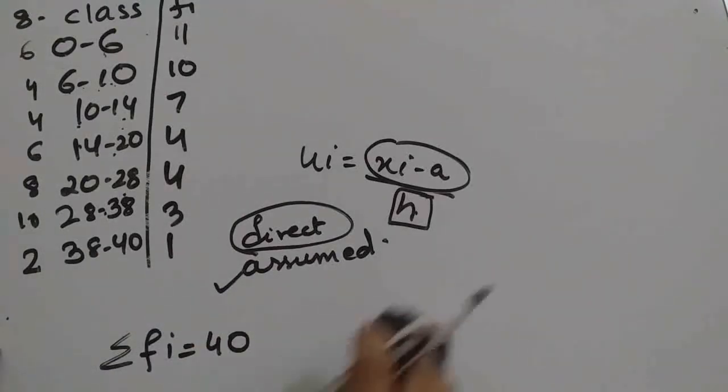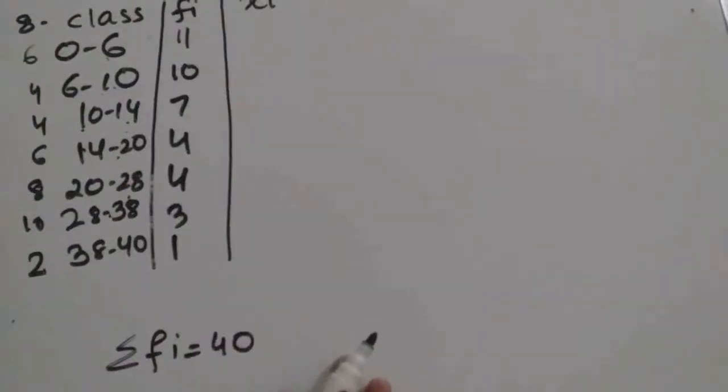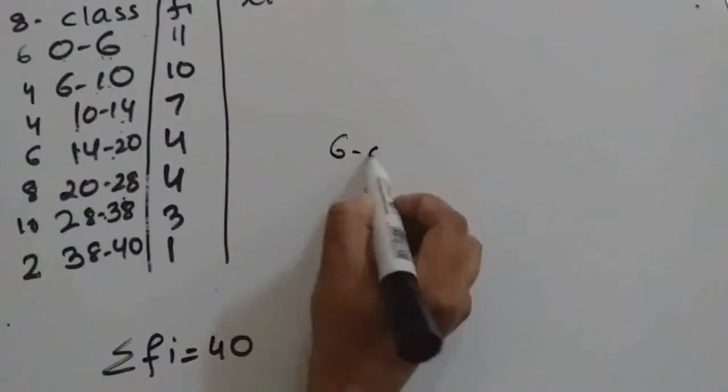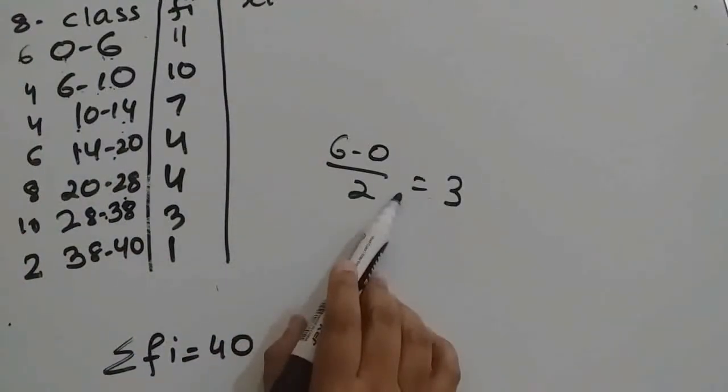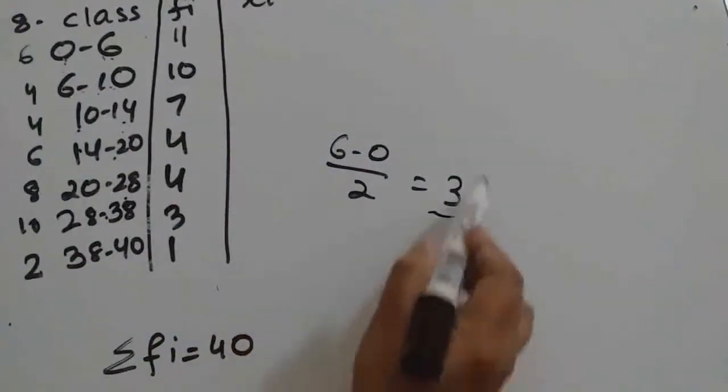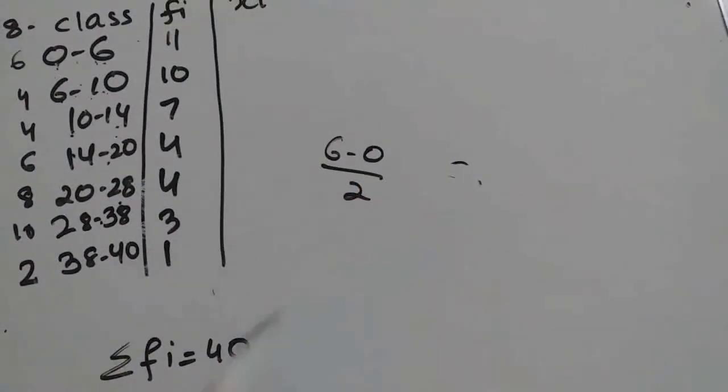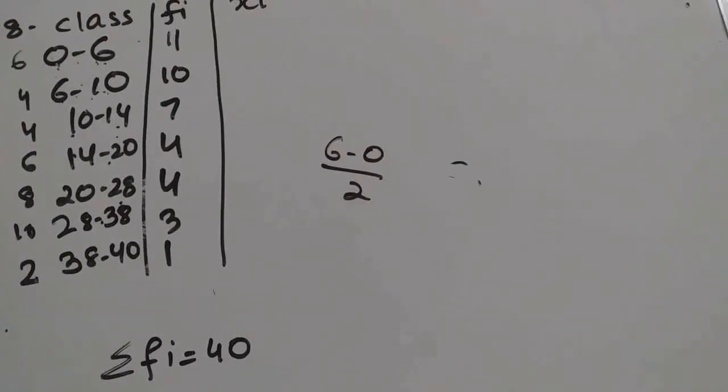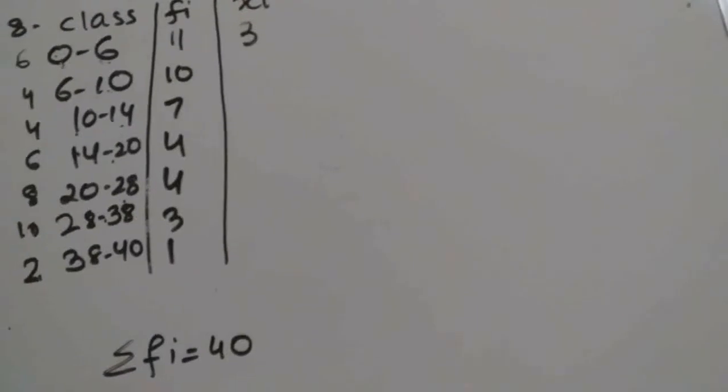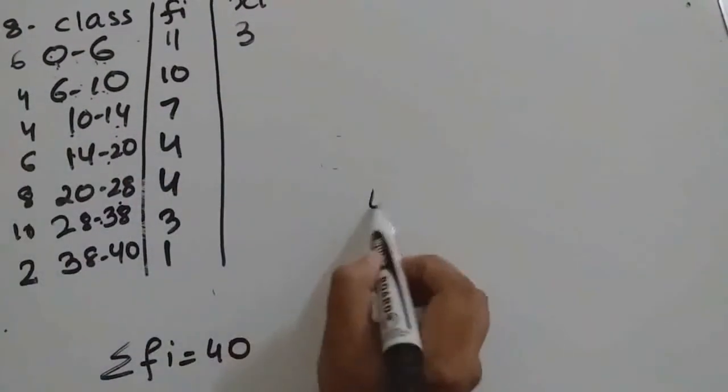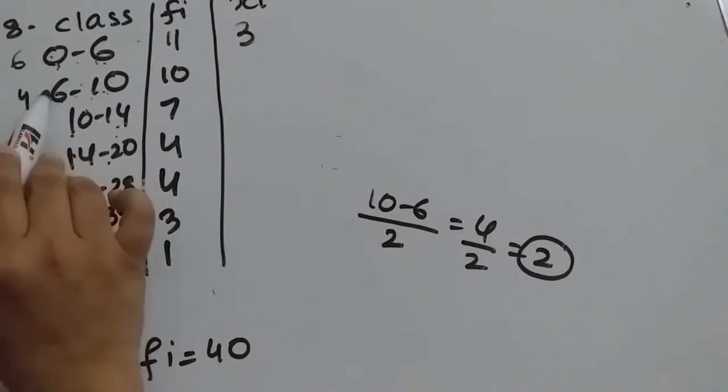For this particular example, first we will find xi, that is class mark. Here's the trick I gave: 6 minus 0 divided by 2 equals 3, and 3 we should add to the lower class. In the previous example we found it for one class and added it to each lower limit, but here you have to find separately for each class since class size is different. So 0 plus 3 means 3, so the class mark for the first class will be 3. Then for the next class, 10 minus 6 divided by 2 equals 2. This 2 you should add to the lower limit, so 6 plus 2 will give 8.